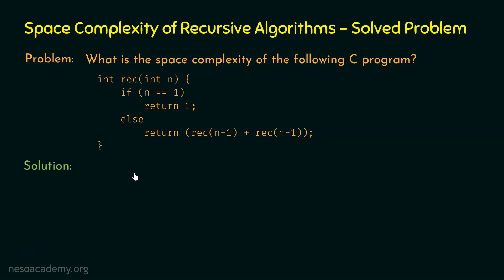Let's dive into the solution and find the space complexity of this C program. Here we can observe this is the rec function, and within this function, variable n is declared. This means the input it receives is n. Inside this function, we are checking the condition: if n is equal to 1, then we will return 1 from this function. The return type here is integer, and we are also returning an integer.